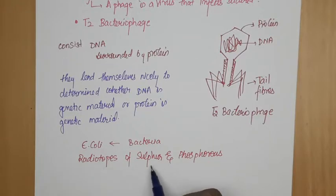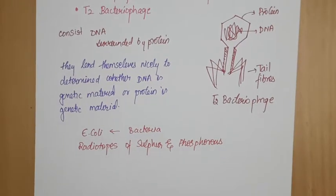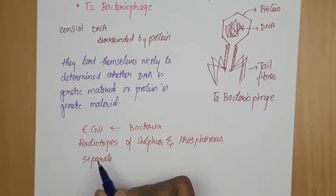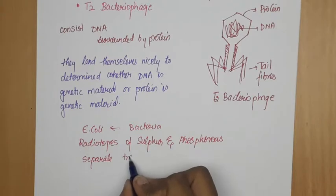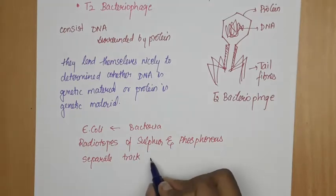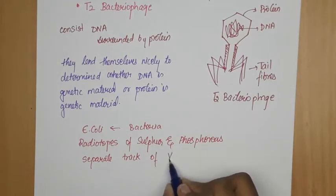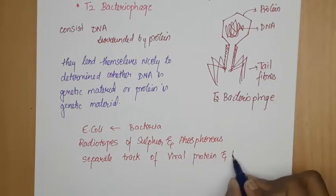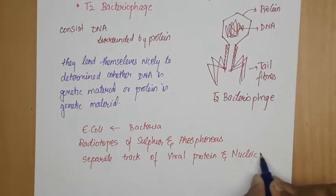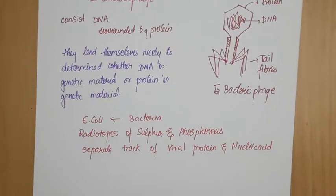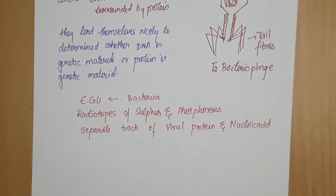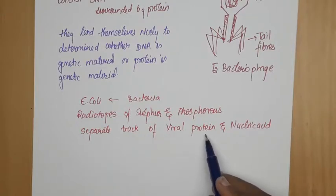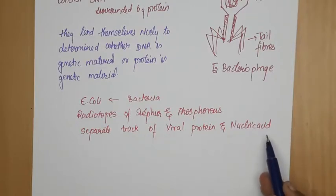Why did they use radioisotopes sulfur and phosphorus? They used these to separate the track of viral protein and nucleic acid during the infection process.